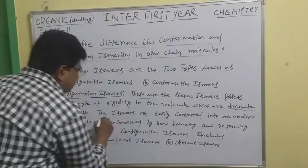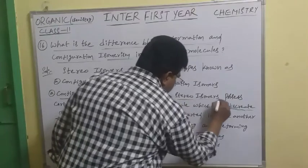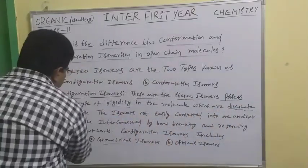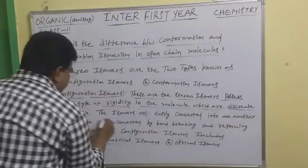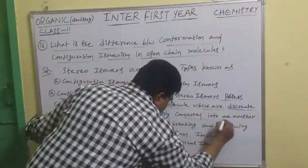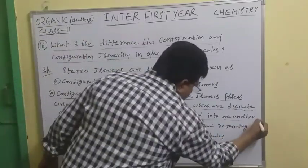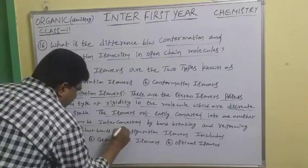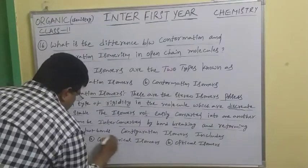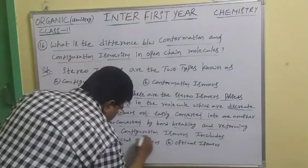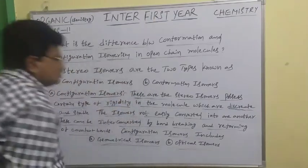These configuration isomers are not easily converted into one another. They can be inter-converted by bond breaking and reforming of covalent bonds. The configuration isomers include geometrical isomers and optical isomers.